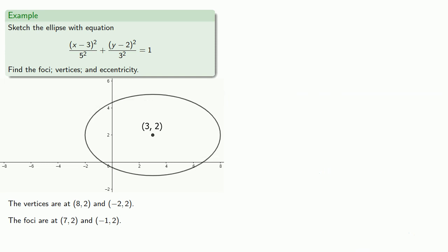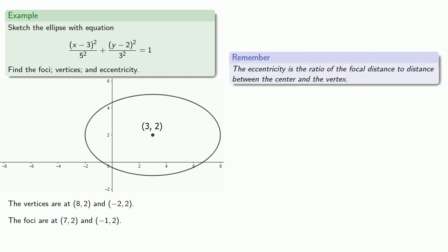Finally, the eccentricity is the ratio of the focal distance to the semi-major axis, so that's going to be 4 fifths.